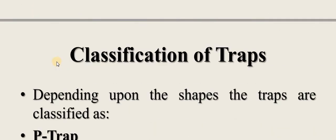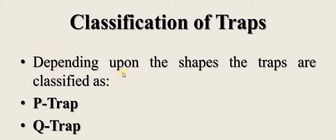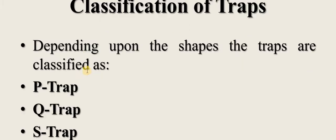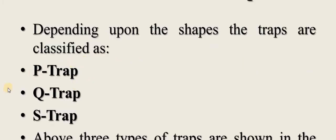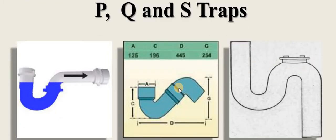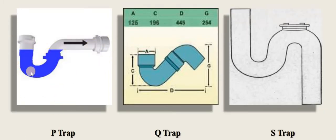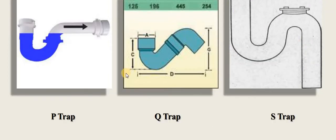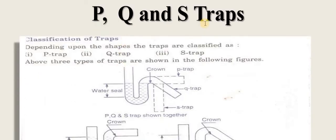Classification of traps depending upon shapes: traps are classified into three types — P trap, Q trap, and S trap — named because they resemble the shapes of the alphabets P, Q, and S respectively. These three types are shown in the following figures.